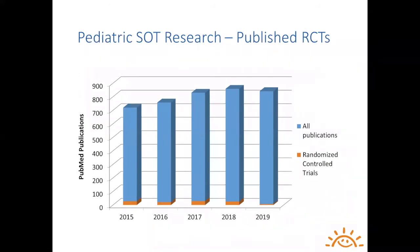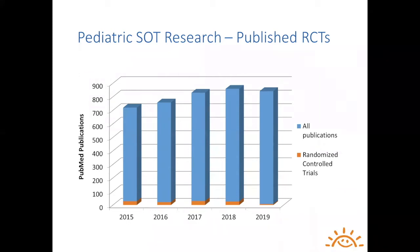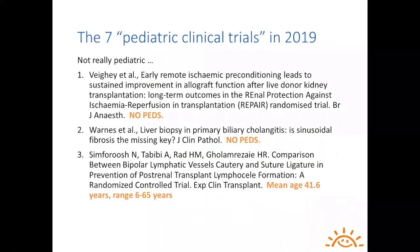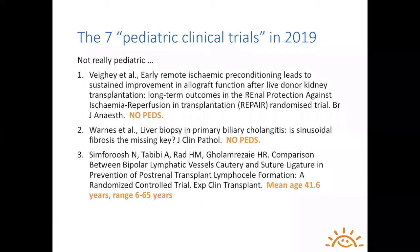Looking at clinical trials specifically, the vast majority of publications are not clinical trials, which we consider a higher bar of evidence for clinical application. In 2019, there were only seven clinical trials reported in all world literature in pediatric transplantation. And if you look at those seven, actually three of them weren't truly pediatric — the first two were adult studies that merely mentioned children, and even the third was mostly an adult cohort but at least included pediatric recipients.